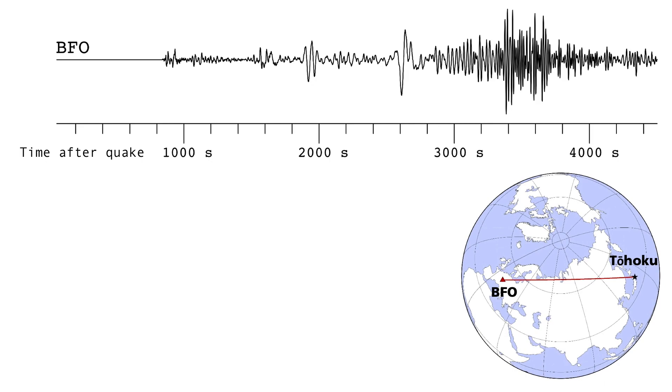These oscillations were triggered by the Tohoku quake over 9,000 kilometers away from the BFO seismic observatory, which is located in the Black Forest and operated by the Karlsruher Institute of Technology and the University of Stuttgart. The seismogram contains records lasting over an hour. Strong earthquakes can set the earth in motion for this long, or even longer.